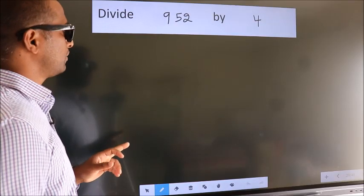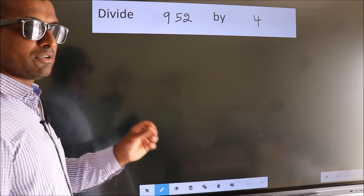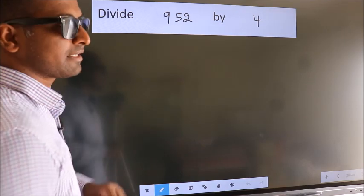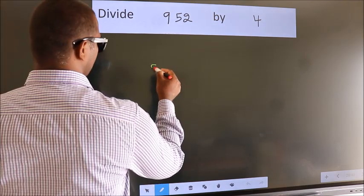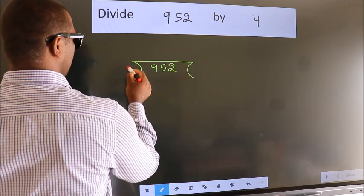Divide 952 by 4. To do this division, we should frame it in this way. 952 here, 4 here.